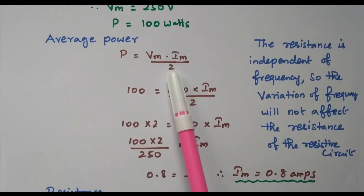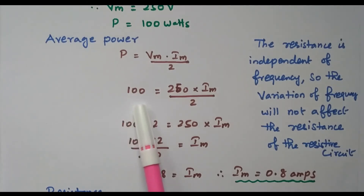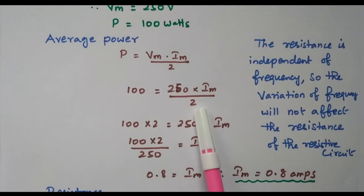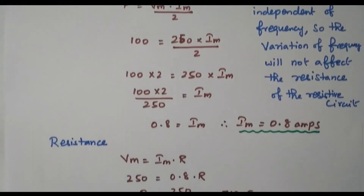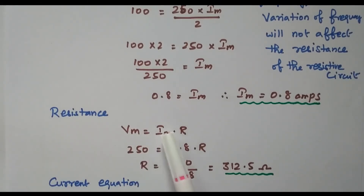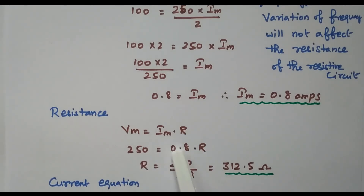Using average power P = (Vm × Im) / 2: 100 = (250 × Im) / 2, so 100 × 2 = 250 × Im, giving Im = 200 / 250 = 0.8 amperes. Then, using Vm = Im × R: 250 = 0.8 × R, so R = 250 / 0.8 = 312.5 ohm. We have now calculated the resistance.